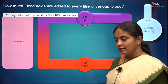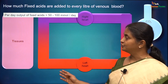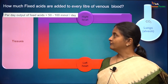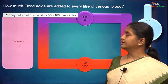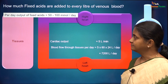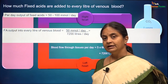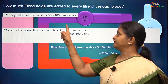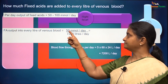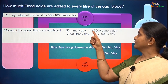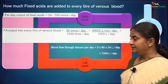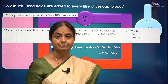Let us look at the quantum of fixed acids added per liter of blood coursing through tissues. We have done this calculation for carbon dioxide earlier; we will do a similar calculation for fixed acids. Per day output is 50 to 100 millimoles and the blood flow through tissues every day is 7200 liters. Therefore the fixed acid output into every liter of blood would be: taking 49,000 micromoles per day divided by approximately 7000 liters per day, that gives us a value of 7 micromoles per liter.